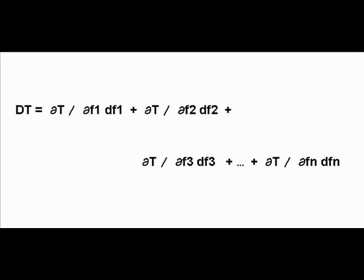In English, that formula says the total change of temperature is given by a summation of the partial change of temperature T with respect to factor 1 times the change of factor 1, and so on.